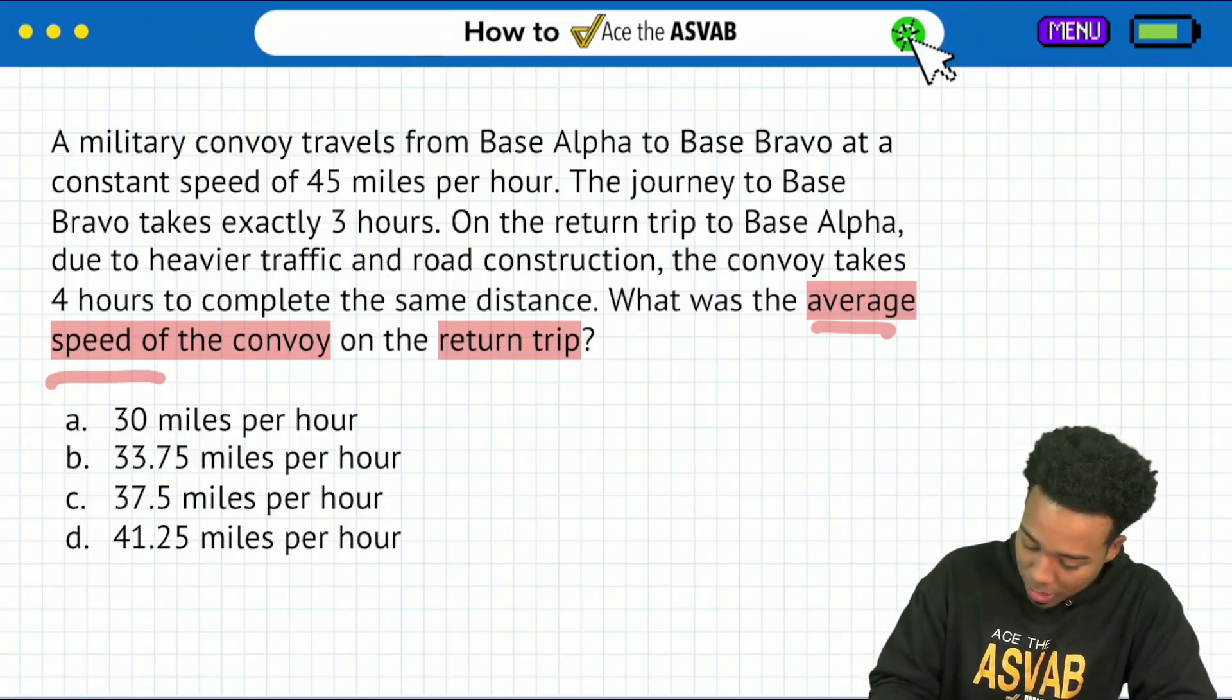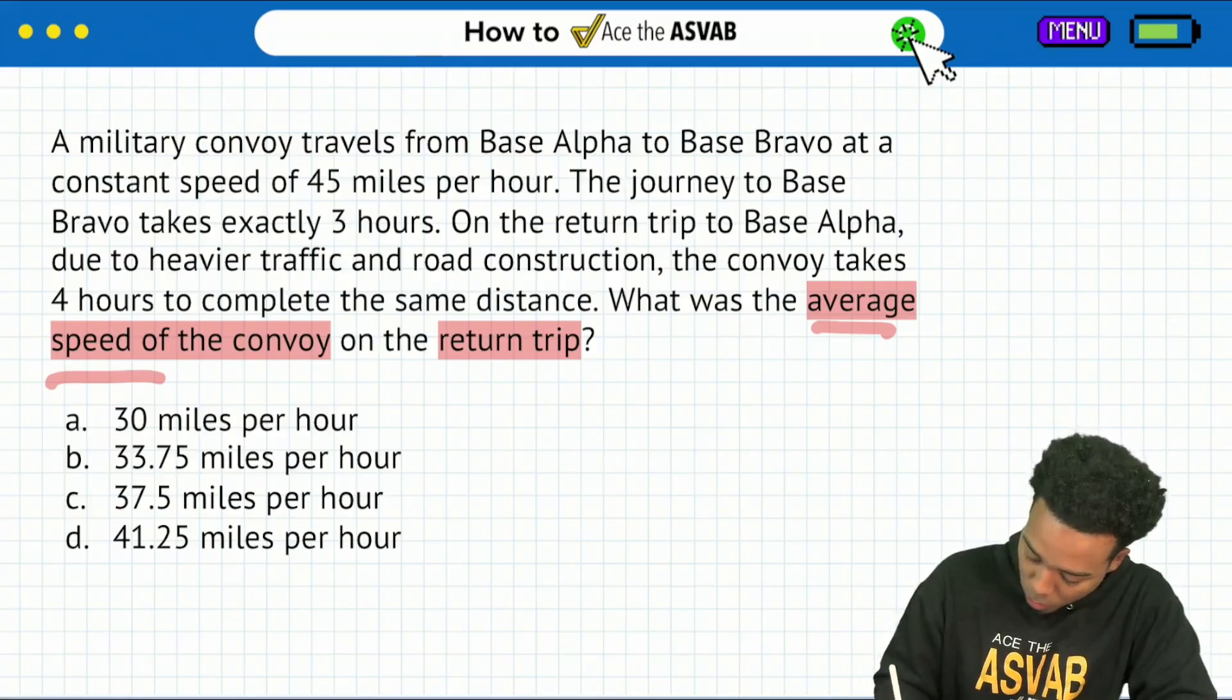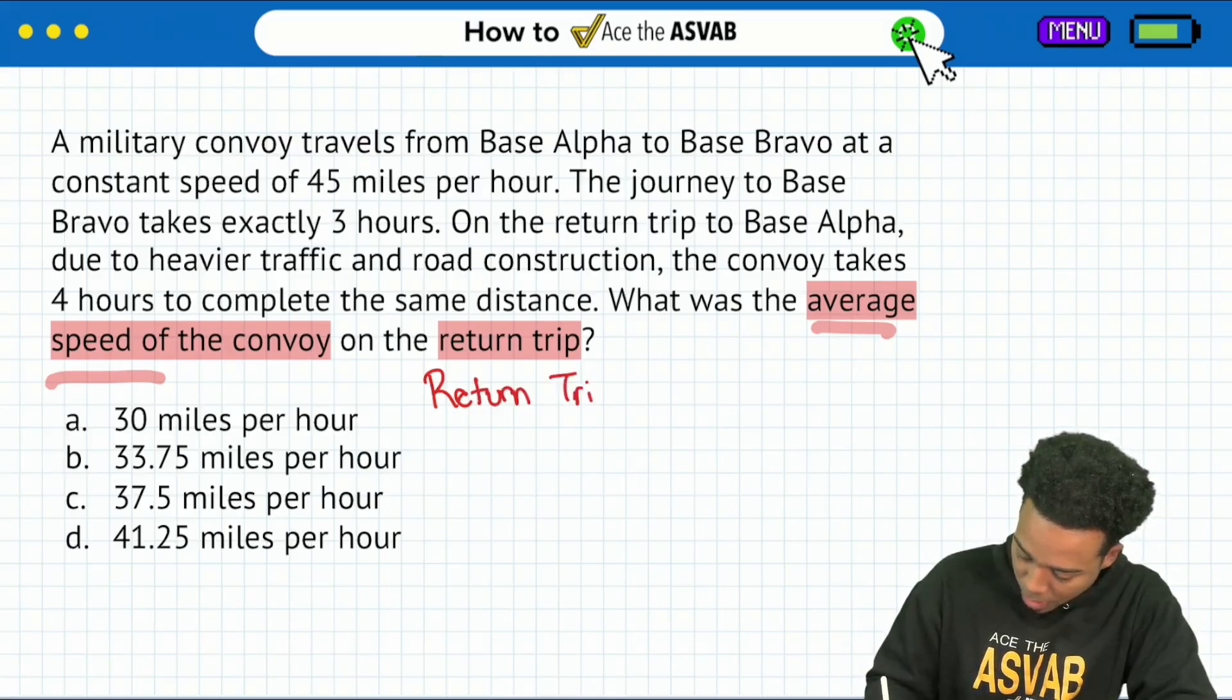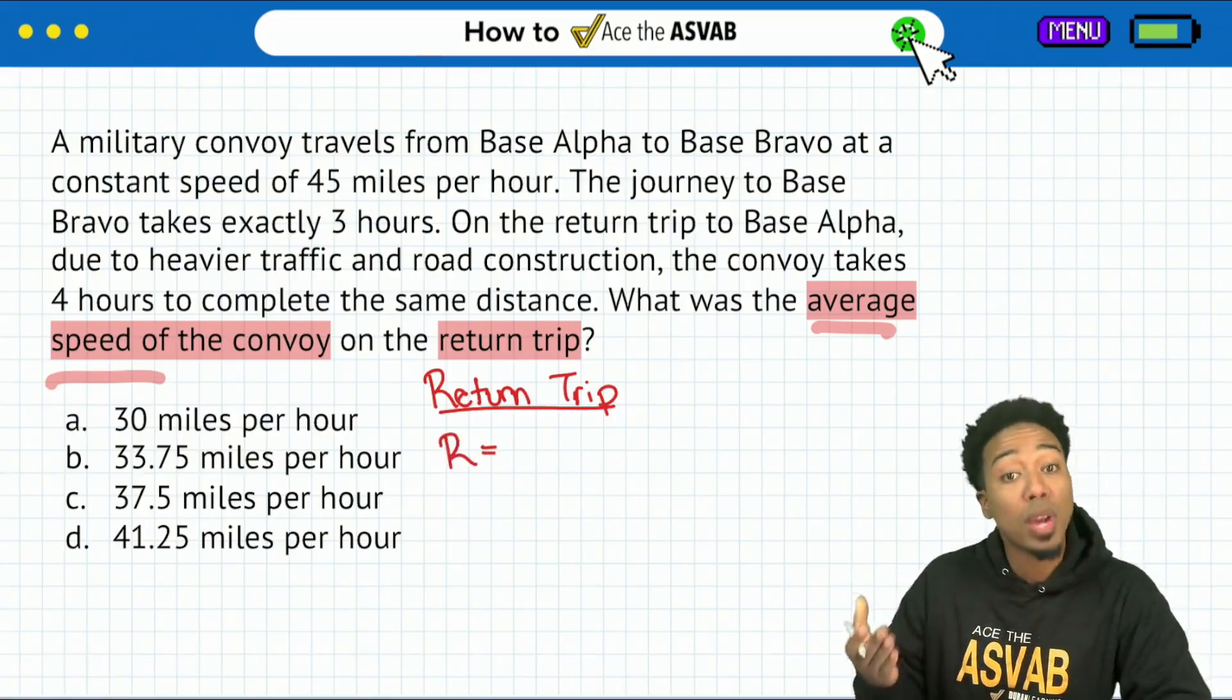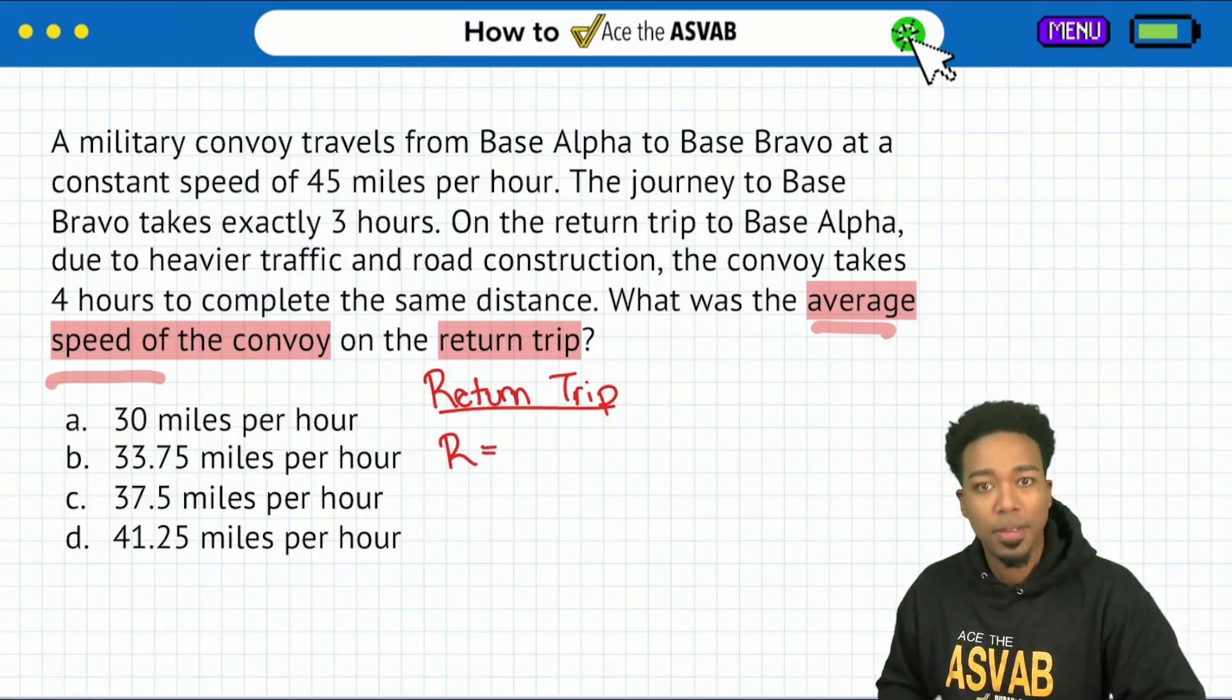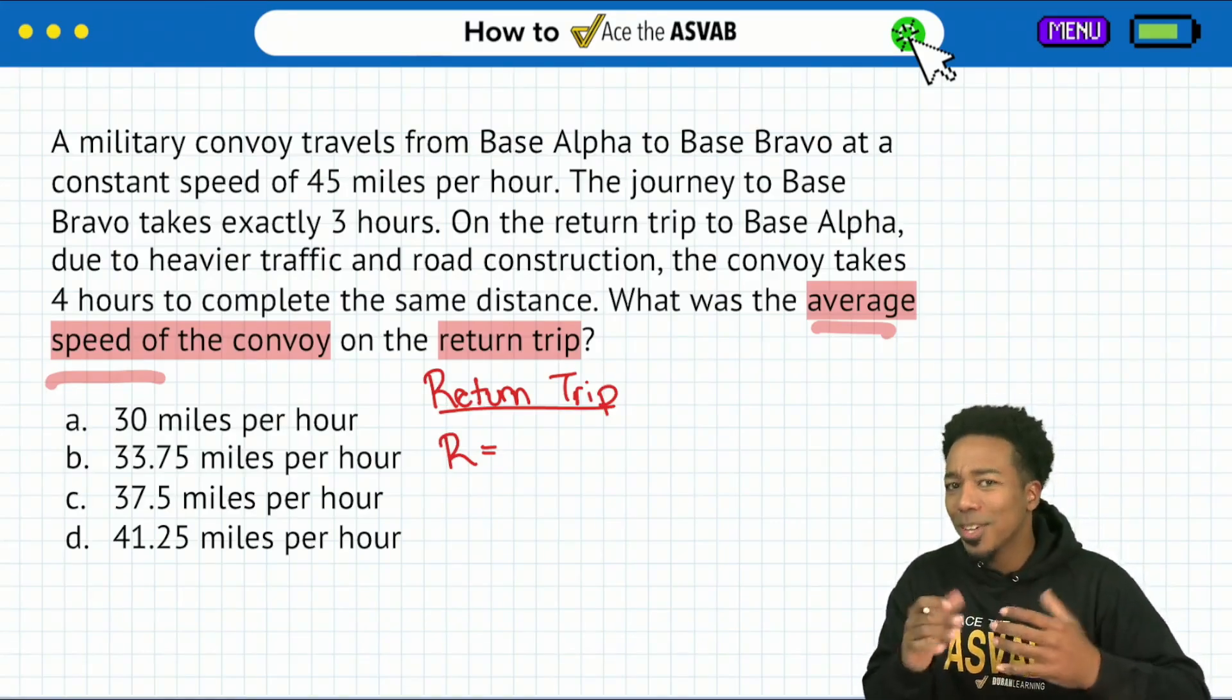And we want the average speed specifically for the return trip. So allow me to write this over here. I'm going to write return trip. And then I'm going to write that I want the average speed, which is the same thing as saying the rate for the return trip.